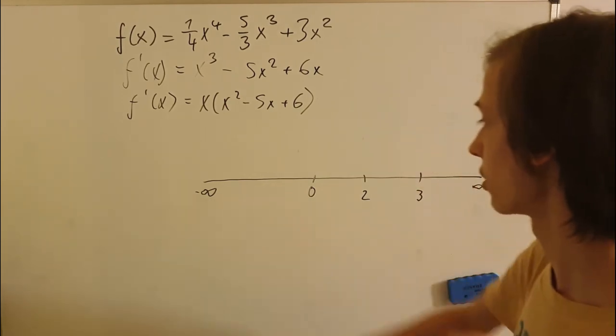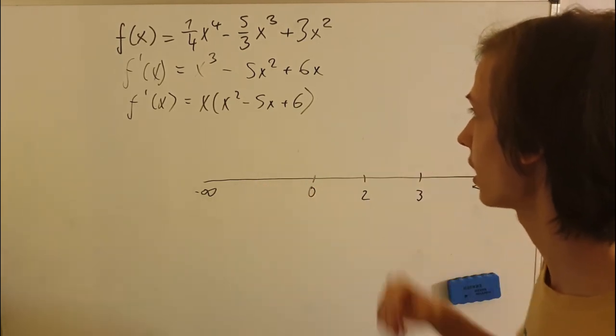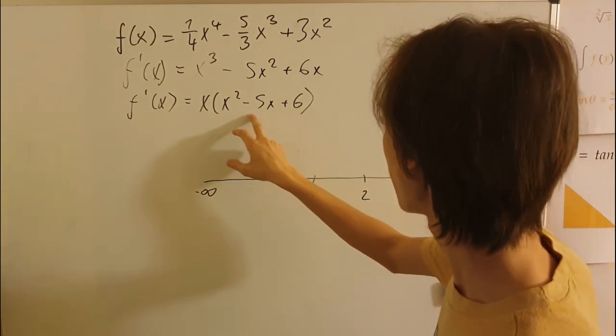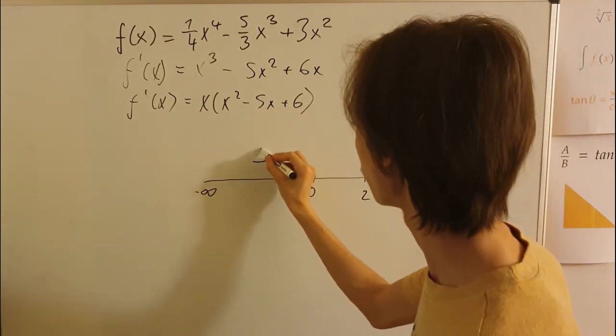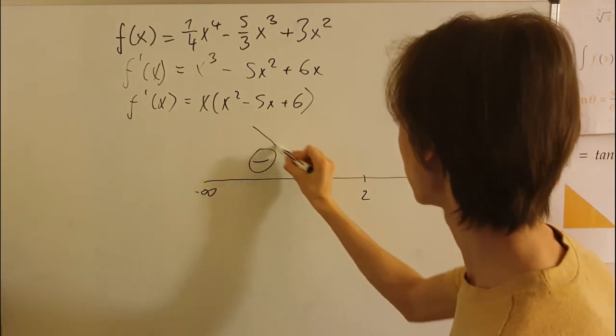Okay, so let's plug in a random point here. So for example, minus one, okay? So if we plug in minus one, we'll get minus one times one plus five, six, 36. So it's going to be a minus interval. So here it is decreasing.